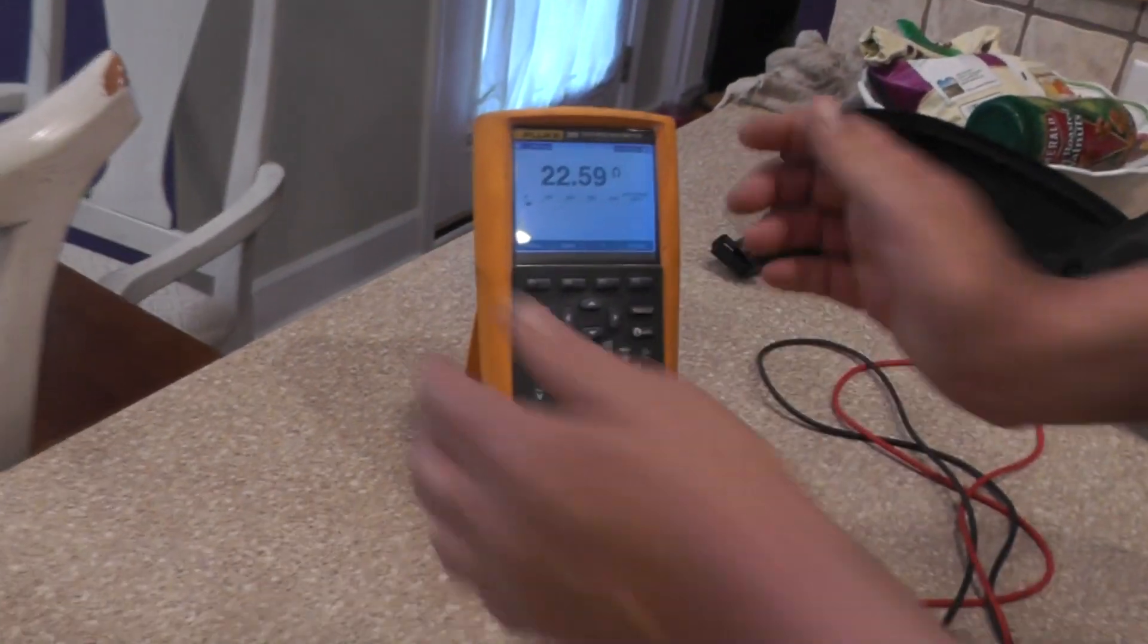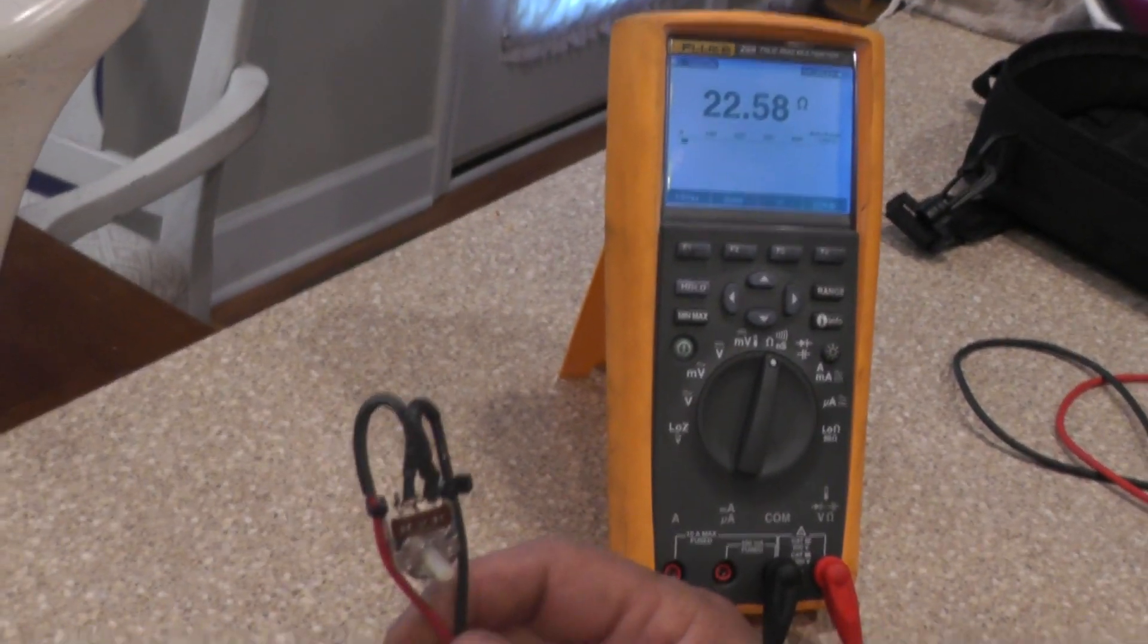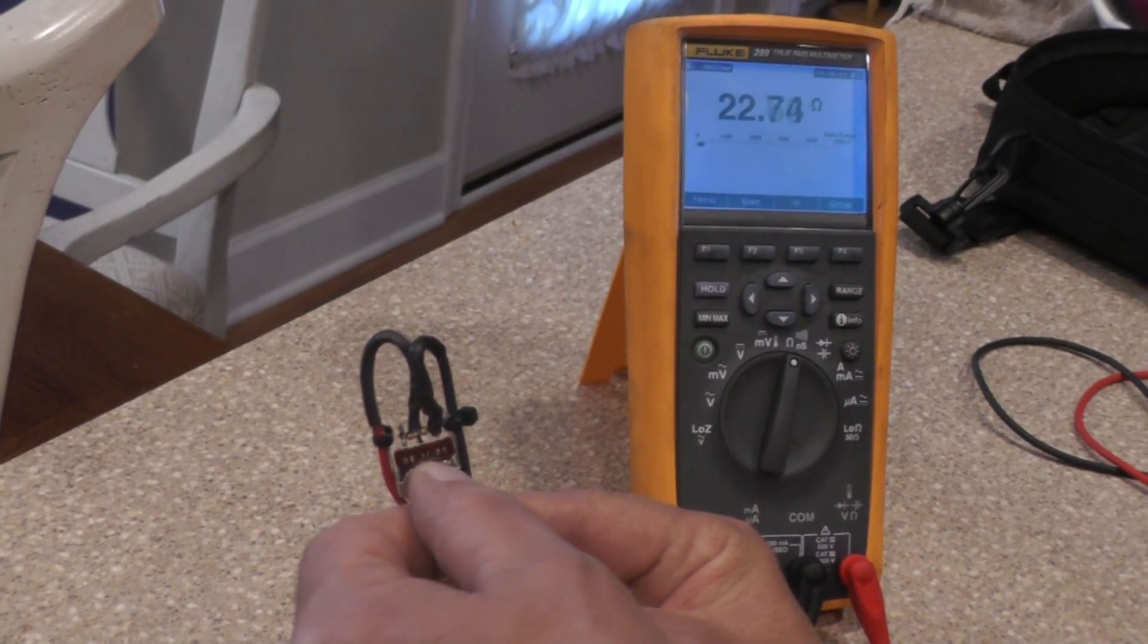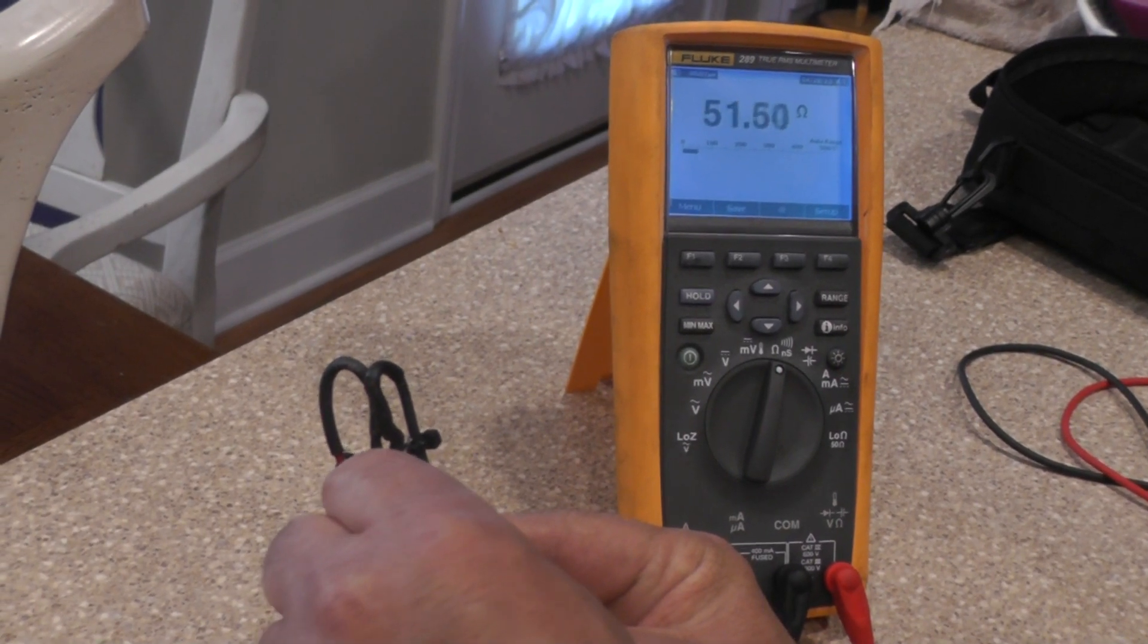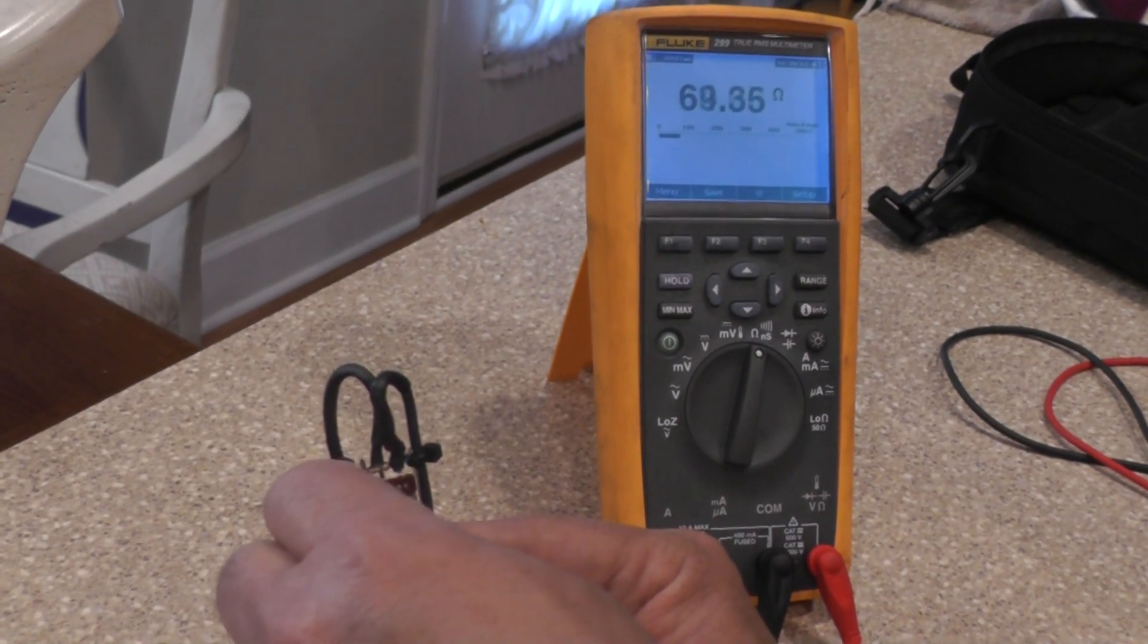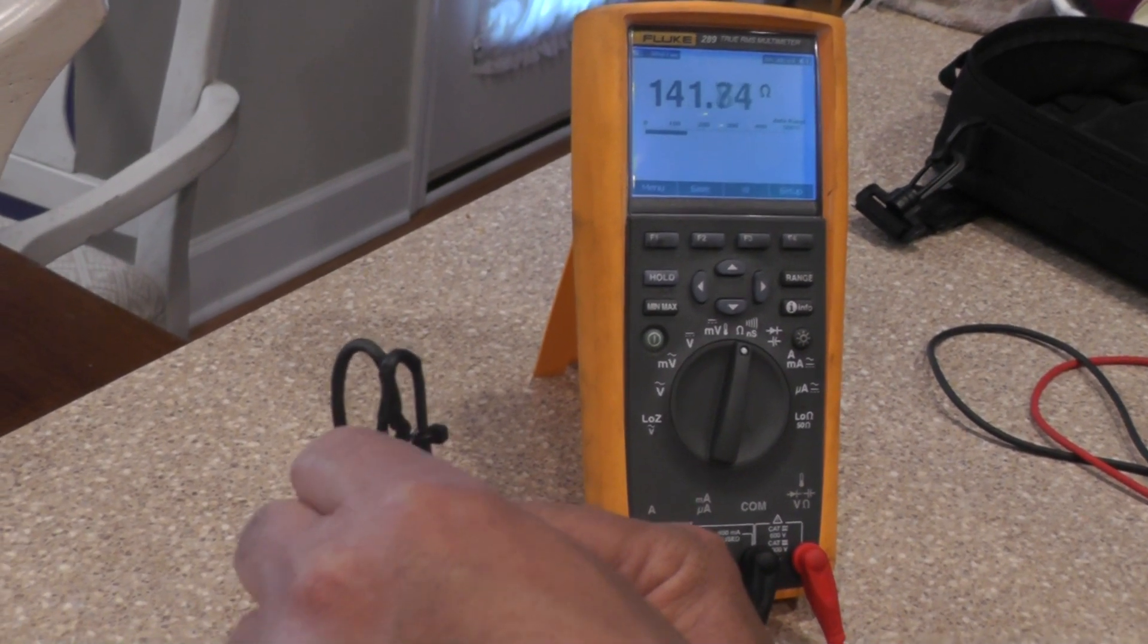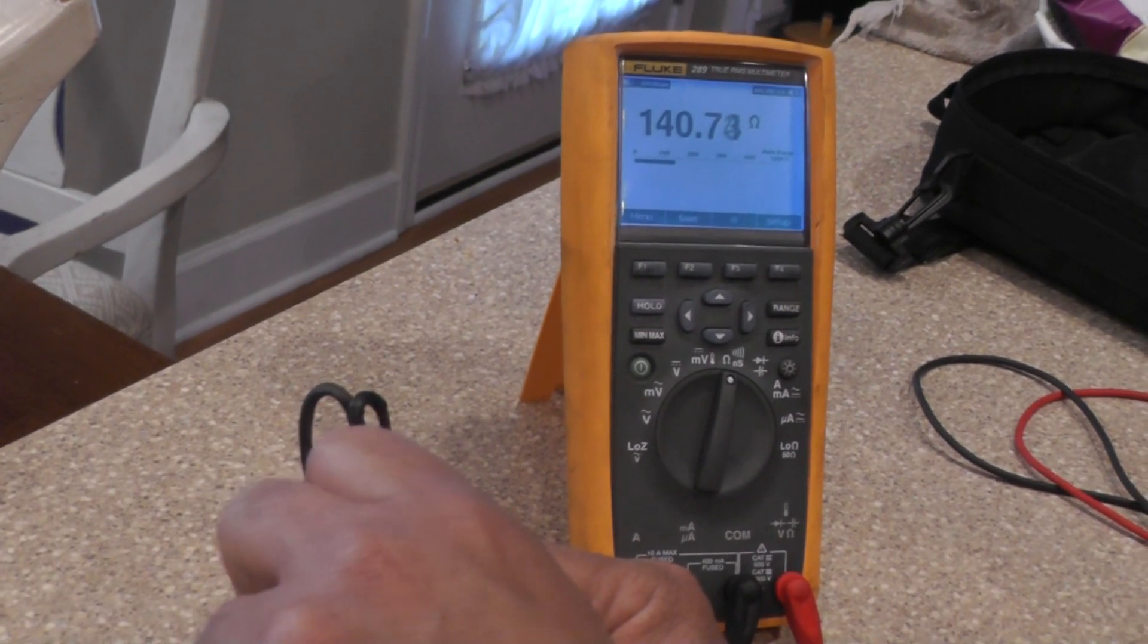Now if you remember, we should have 22.4 ohms when the tank is empty. Now the pot is fully counterclockwise, which is what I wanted. And as I turn the pot clockwise, the resistance should increase. Now at the full reading when the tank is full, then we should have 145. But I'm going to come up a little bit short of that just to show you, but it's nothing critical here. And you can see I got about almost 141. So that's it.